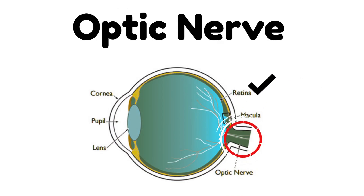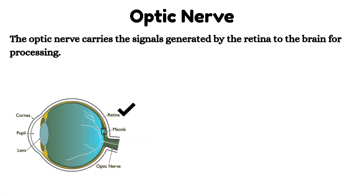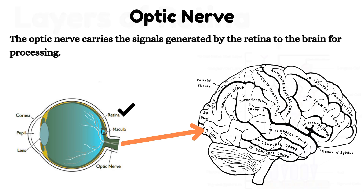Optic Nerve: The optic nerve carries the signals generated by the retina to the brain for processing.